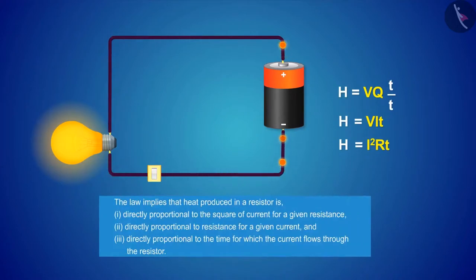The law implies that heat produced in a resistor is directly proportional to the square of current for a given resistance, directly proportional to resistance for a given current, and directly proportional to the time for which the current flows through the resistor.